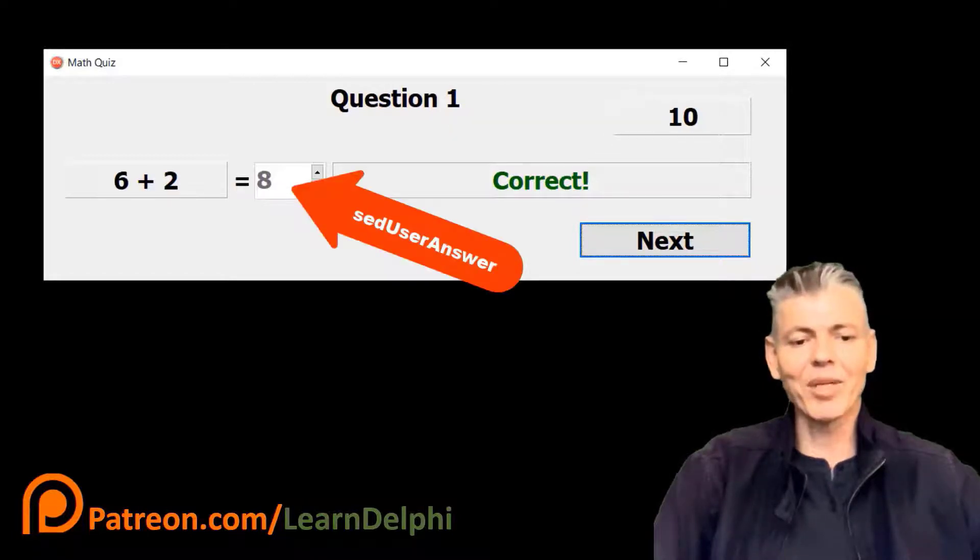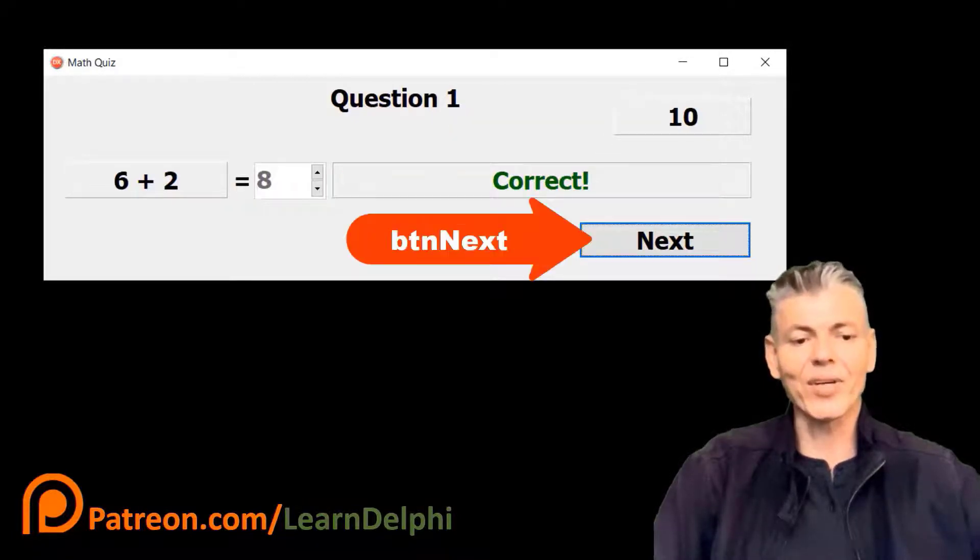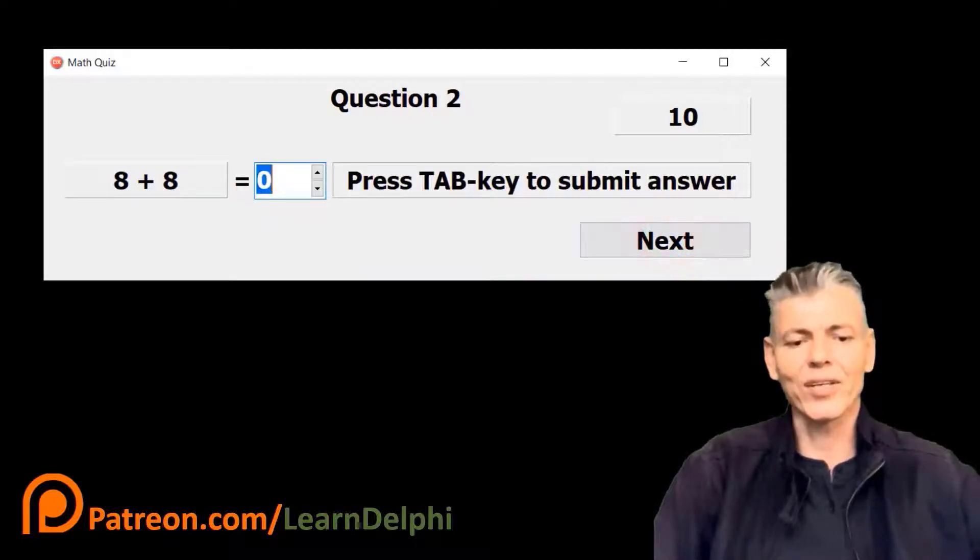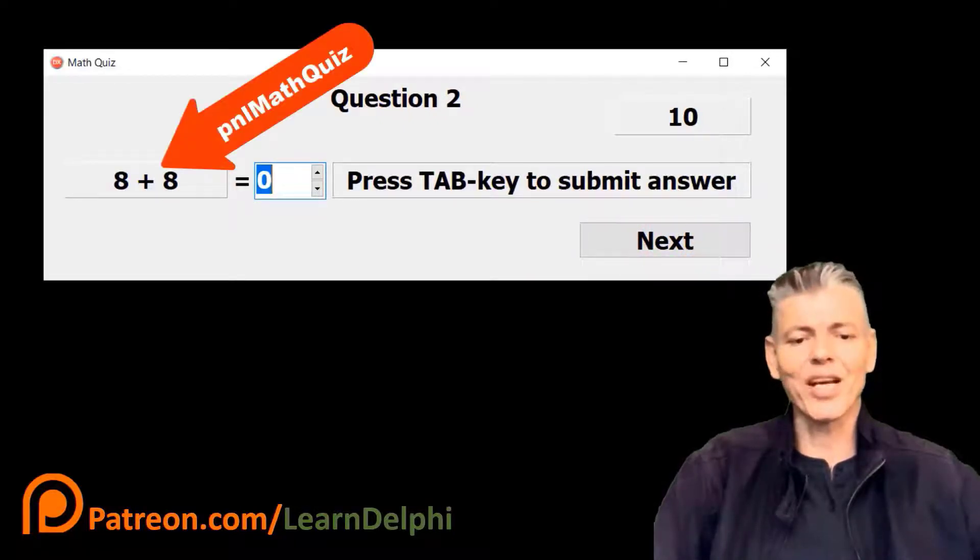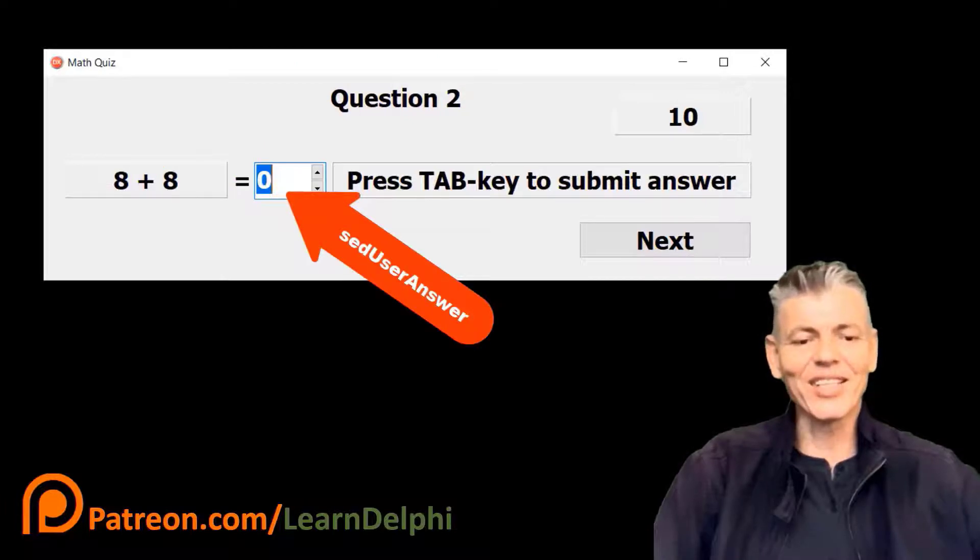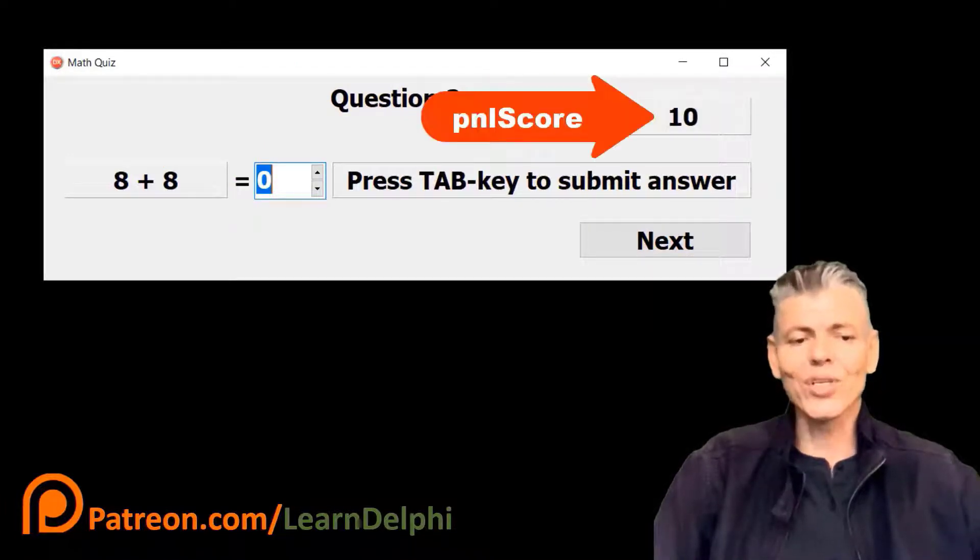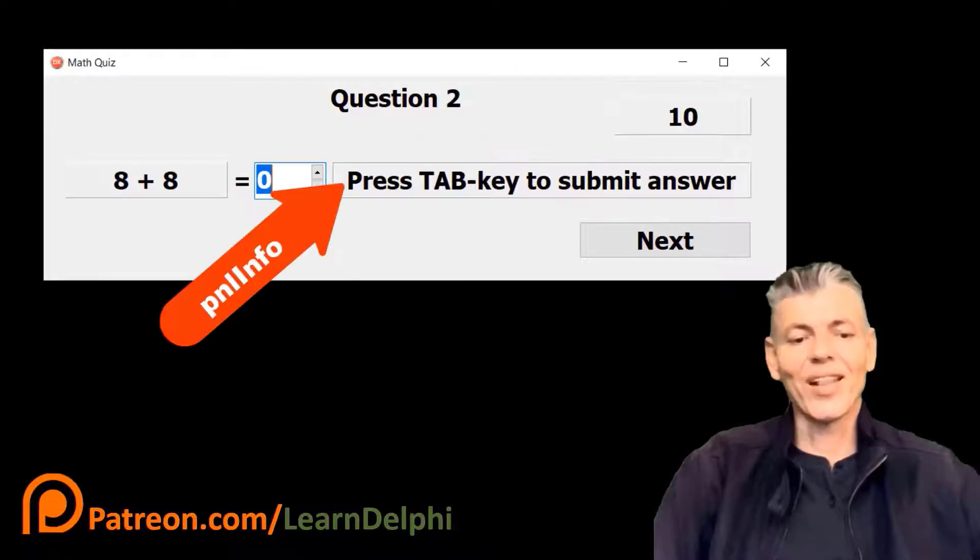The spin edit is disabled again, and the button has focus. So you can just press enter or click the button for the next random question. Now the next random question displays. The spin edit is enabled and it has focus. And the question number is incremented. Your score also incremented with 10 points. And this panel tells you to press tab to submit your answer.